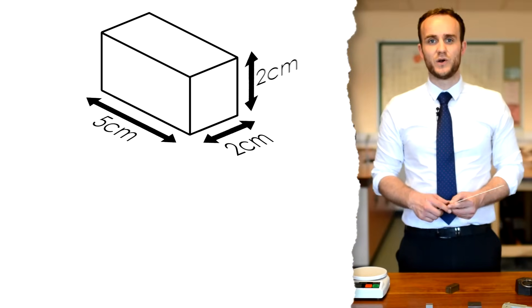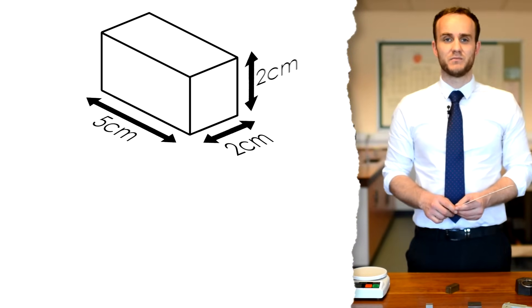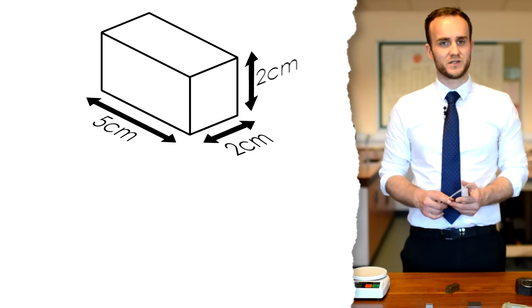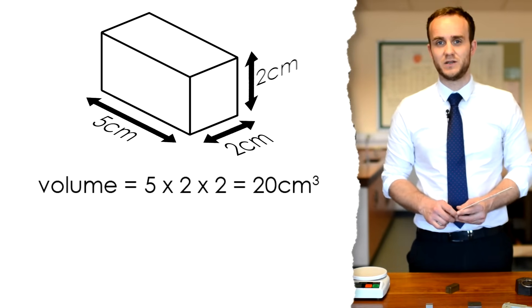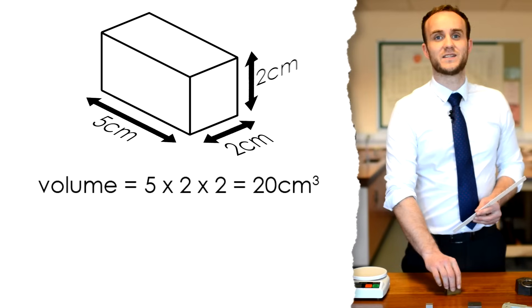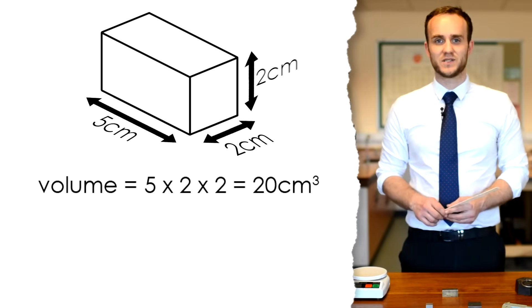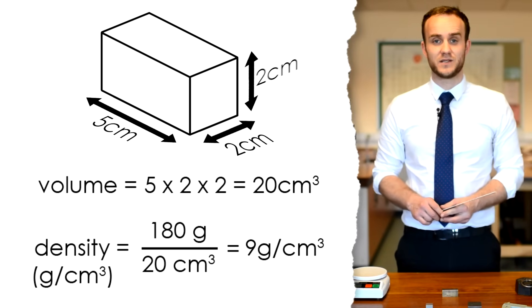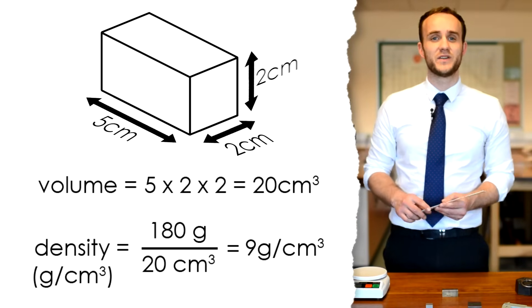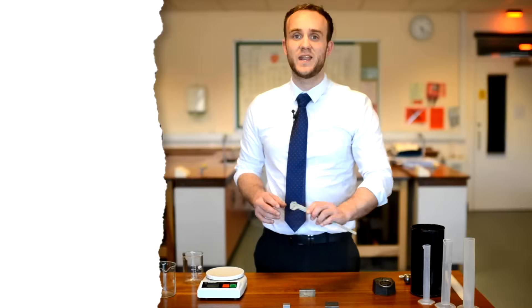So how do we calculate the volume of a cuboid? It's all three dimensions multiplied together. So five times two times two gives us 20 centimetres cubed. Calculating the density: we have our mass of 180 grams, divide that by the volume of 20 centimetres cubed, and that gives us a density of nine grams per centimetre cubed.